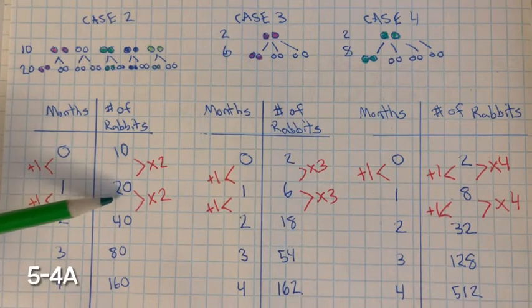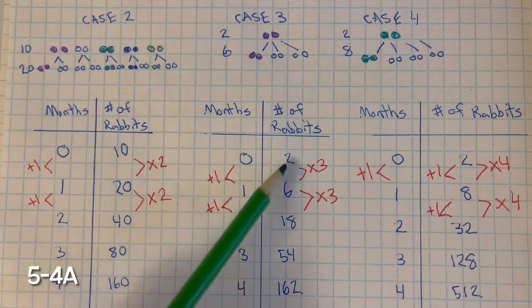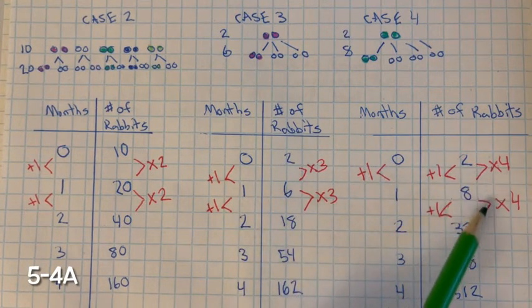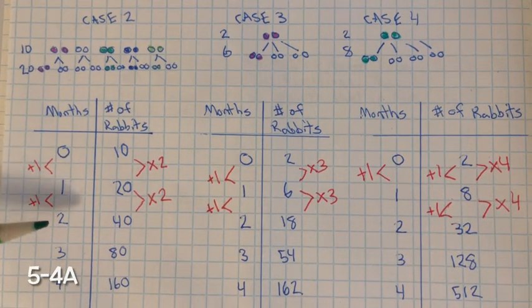For case 2, 10 multiplied by 2 is 20. It's doubling. Case 3, for each month, it's being multiplied by 3. In case 4, for each month, it's being multiplied by 4. So that has exponential growth.